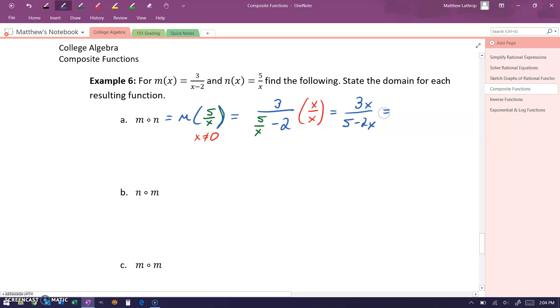Or keep in mind if we wanted to, we could rewrite this as the opposite of this rational function, 3x over 2x minus 5, by factoring that negative out of the denominator.